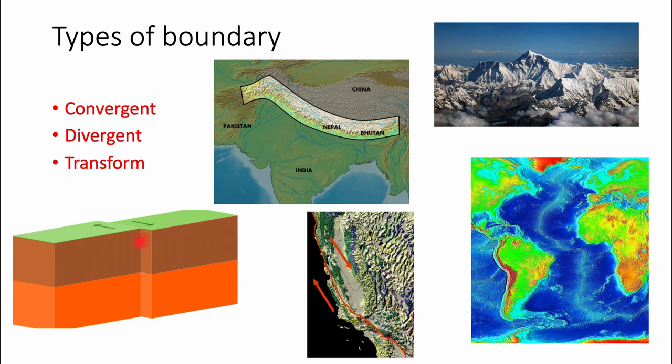Looking at the bottom right section, you can see the Atlantic Ocean between Africa, Asia, North and South America, and Central America. The Atlantic Ocean is actually becoming larger every year as these two plates move apart — that's a divergent boundary. These plates are diverging, and a great example is the Mid-Atlantic Ridge.